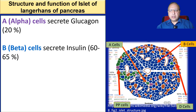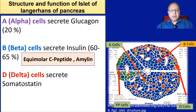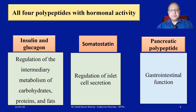Alpha cells that secrete glucagon are roughly 20%. Beta cells that secrete insulin make up 60 to 65%, and there is also equimolar synthesis and secretion of C-peptide, as well as secretion of amylin. D cells secrete somatostatin and F cells secrete pancreatic polypeptide. These are all polypeptides with hormonal activity. Insulin and glucagon are involved in regulation of intermediary metabolism of carbohydrates, proteins, and fats. Somatostatin is an inhibitory hormone involved in islet cell secretion regulation, while pancreatic polypeptide is involved in GI function — its exact function is still unknown.